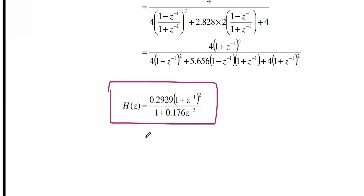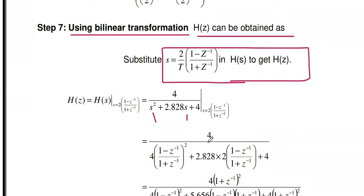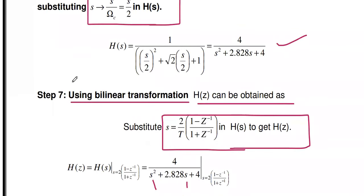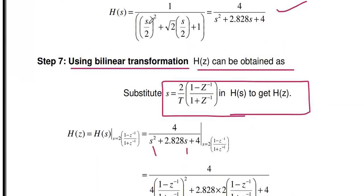This is the transfer function of our digital second-order Butterworth filter for the given specification. If you solve the same problem using the impulse invariant method it takes many more steps, but with bilinear transformation it is easy — you simply replace s in H(s) with the bilinear substitution.